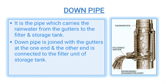Next is the down pipe: it is the pipe which carries the rainwater from the gutter to the filter and storage tank. It is joined with the gutter at one end and the other end is connected to the filter unit or storage tank. In this diagram we can see that rainwater is coming in, filtered water is coming out, and remaining dirt goes down.